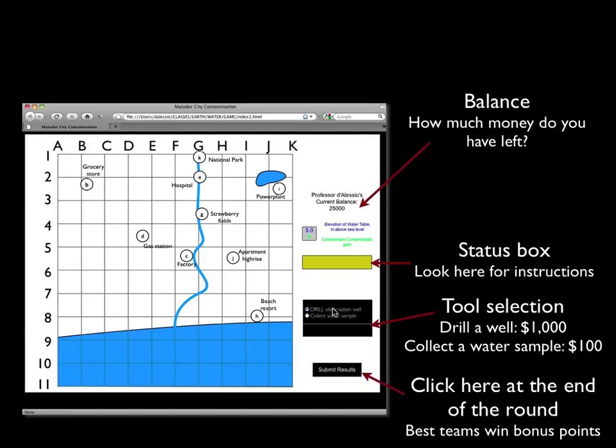If you want to make a well, you can select a drilling a well tool, and it's going to cost you $1,000. You can see your balance is right there. And then after you've drilled a well, should you choose to, you may collect a water sample. It'll only cost you $100.